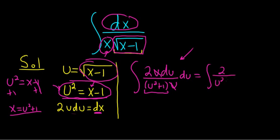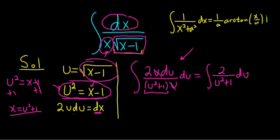2 over u squared plus 1 du, gotta love mathematics, or gotta love integration. This is a formula, a very familiar one, let me recall, in case you've forgotten, this is 1 over x squared plus a squared dx. The formula tells us that this is 1 over a, arctangent of x over a plus c.